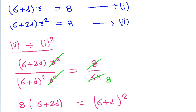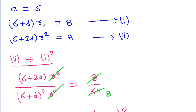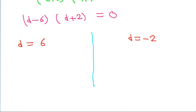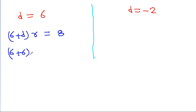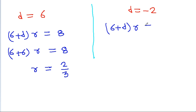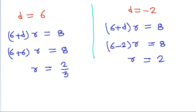Using equation 1, which is 6 + D·R = 8: when D = 6, we get 6 + 6·R = 8, so R = 2/3. For the second case with D = −2, substituting into equation 1 gives R = 2. So we have two solution sets: D = 6, R = 2/3 and D = −2, R = 2.